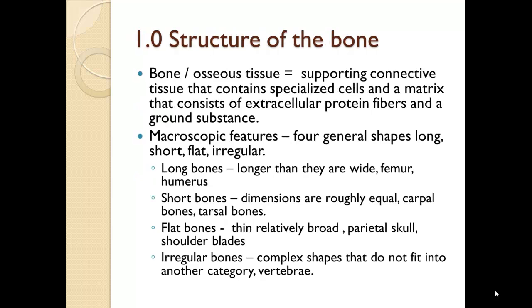Structure of the bone — osseous tissue. Supportive connective tissue that contains specialized cells and a matrix consisting of extracellular protein fibers and a ground substance. Macroscopic features are features you can see. There are four general shapes: long, short, flat, and irregular.